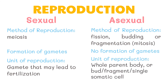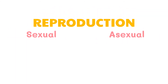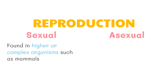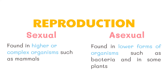In asexual reproduction, the unit of reproduction may also be a bud, a fragment, or a single somatic cell. Sexual reproduction is commonly found in higher or complex organisms such as mammals. On the other hand, asexual reproduction is commonly found in lower forms of organisms such as bacteria and in some plants.